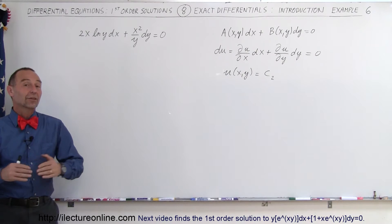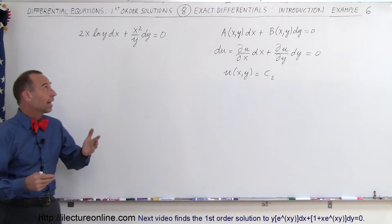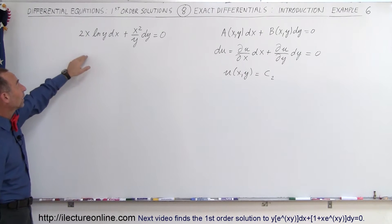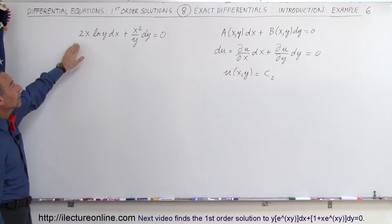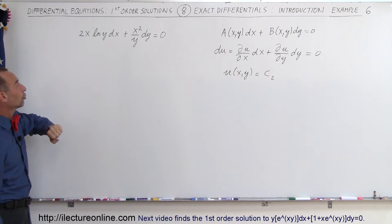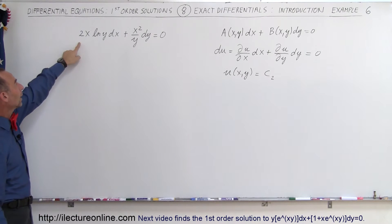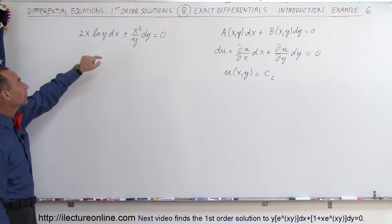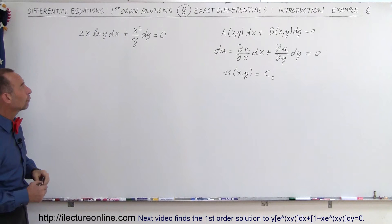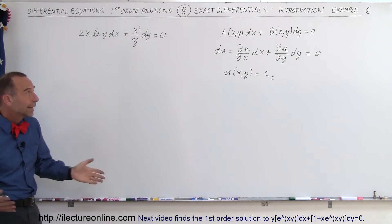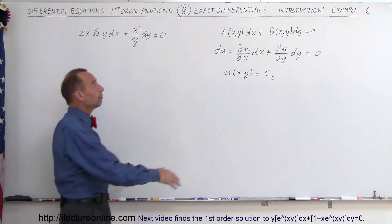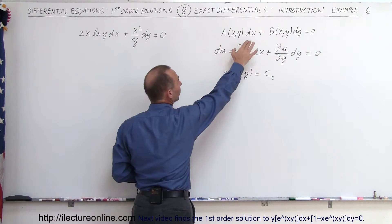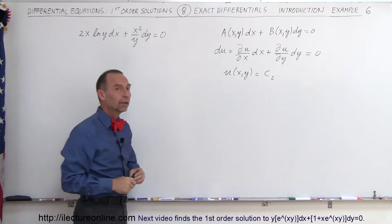Welcome to our lecture. Now let's do an example that has a natural log in the equation. We have an exact differential equation of the first order: 2x times the natural log of y dx plus x squared over y dy equals zero. It's in the general format of A times dx plus B times dy equals zero.